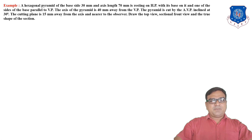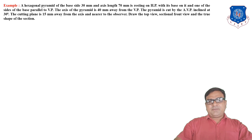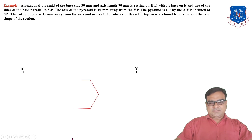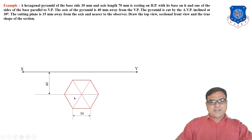Next problem: A hexagonal pyramid with base side 30 mm and axis 70 mm is resting on HP with its base on it, and one side of the base is parallel to VP. The axis of the pyramid is 40 mm away from VP. Draw the XY line and the top view of the hexagonal pyramid with 30 mm edge of base, where the center or axis is 40 mm from XY. The top view shows all corners A, B, C, D, E, F by projecting lines.